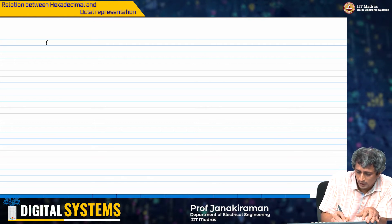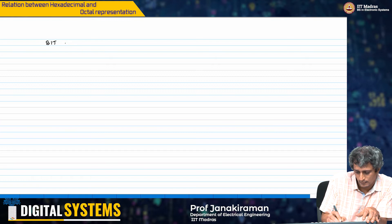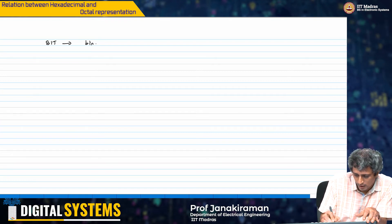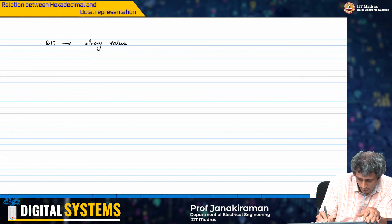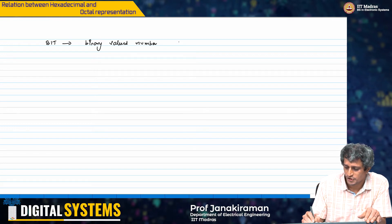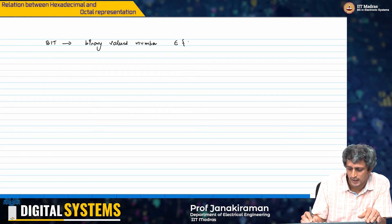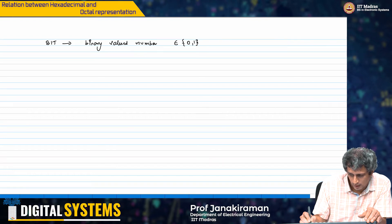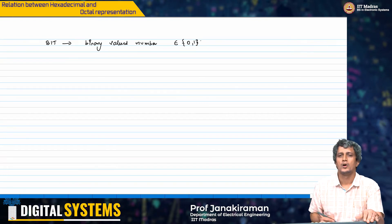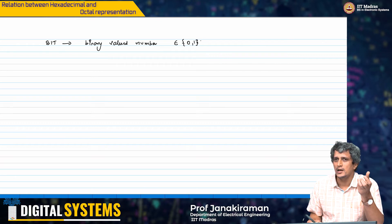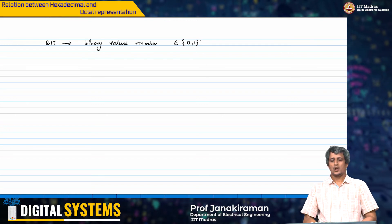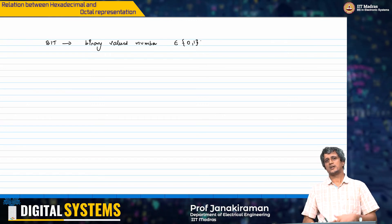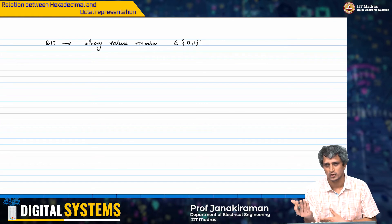One sort of just to summarize some of this discussion, we know what a bit is. A bit is a binary valued number where each of this can take the value 0 or 1. Now you do not always deal only with bits. If you just look at your computer, you might have heard of this term, is it a 32-bit computer or 64-bit computer.